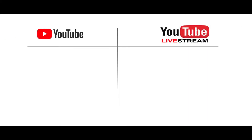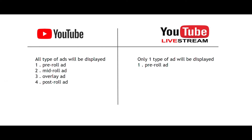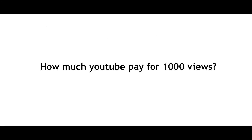There are two types of videos on YouTube: traditional YouTube video and YouTube livestream. For traditional YouTube videos, all four types of ads will be displayed. But for YouTube livestream videos, as of now only one type of ad will be displayed — that is the pre-roll ad. So we can clearly say that for normal YouTube videos there will be more money compared to YouTube livestream videos, though for livestreams there is a Super Chat option available.